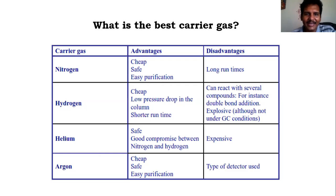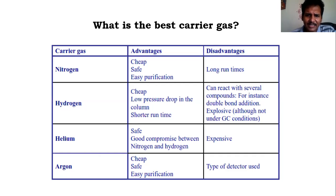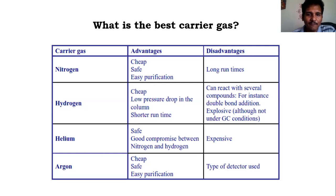Common carrier gases include nitrogen — cheap, safe, easy to purify, but slow through the column — and hydrogen or helium, which are faster but more expensive. Hydrogen can react with several compounds and may be explosive, so each gas has constraints. The choice of carrier gas depends on the specific requirements of the analysis.